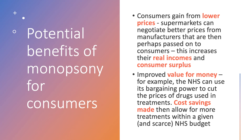Develop the point further: if prices go down, people's real incomes increase. And again, don't be afraid to use Year 12 concepts — we can show how monopsony could lead to increased consumer surplus. A slightly wider point: if you think about things like the NHS buying in bulk — PPE, drugs for healthcare treatments — that's an example of monopsony power.